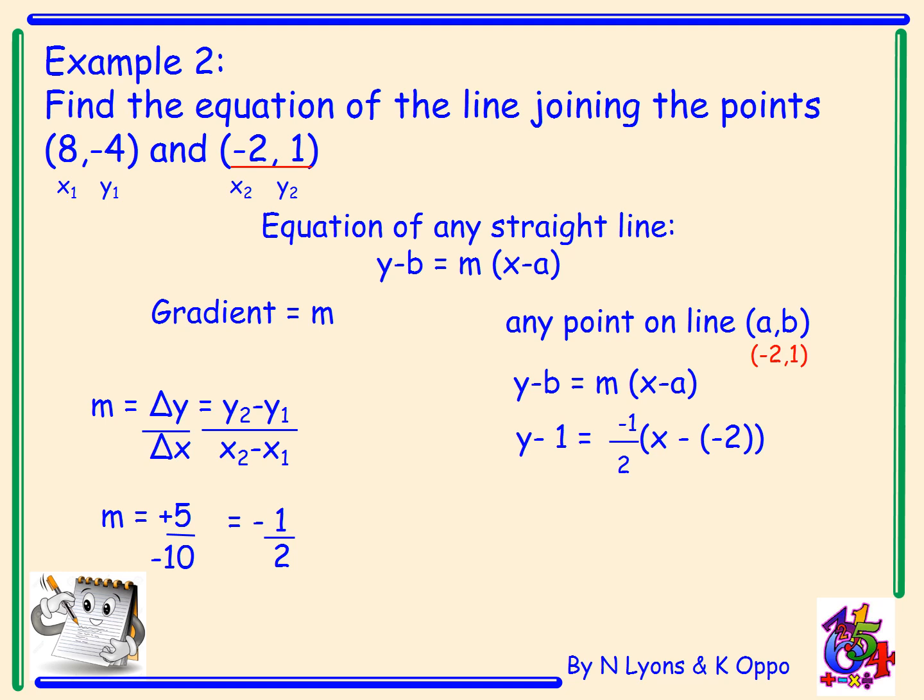Again, I want to simplify it. I don't want to work with fractions, so I multiply through by the denominator. In this case, it's the number two. That gives me 2y minus 2 equals minus x plus two. So the x minus minus two has become an x plus two, and I still have that negative one as the numerator of the fraction.